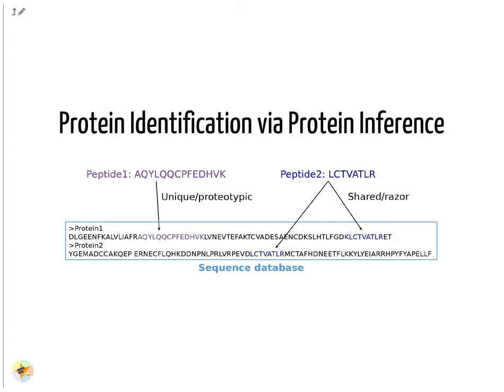After having identified peptides, they need to be reconstructed into proteins. This step is called protein inference and is not trivial. Unique or prototypic peptide sequences belong to one protein, but other peptide sequences may belong to several proteins — these are called shared or razor peptides. Most protein inference algorithms assign them to the protein that has the most other peptides. In the depicted example, peptide 2 would be matched to protein 1, which is for sure present in the sample because it has one unique peptide.